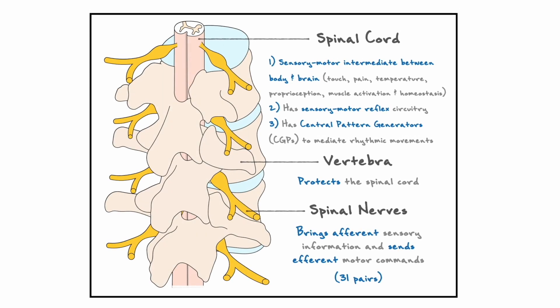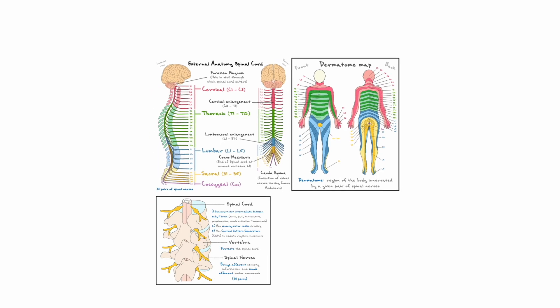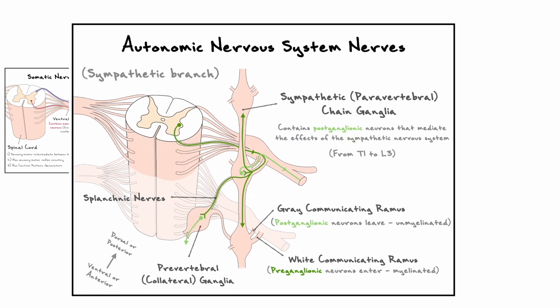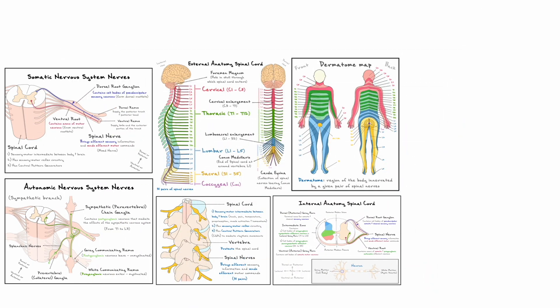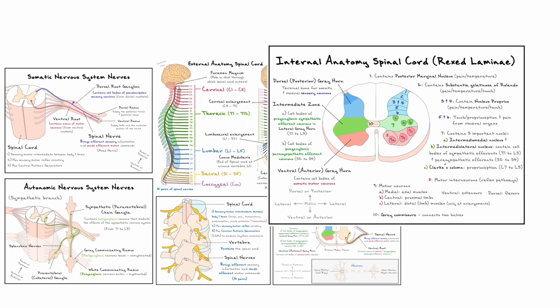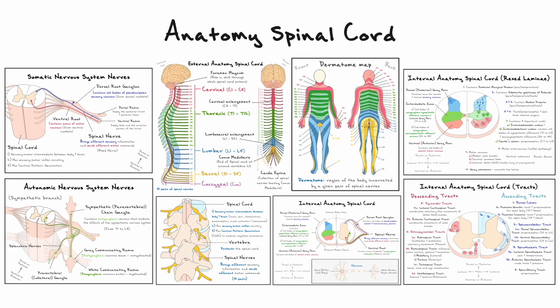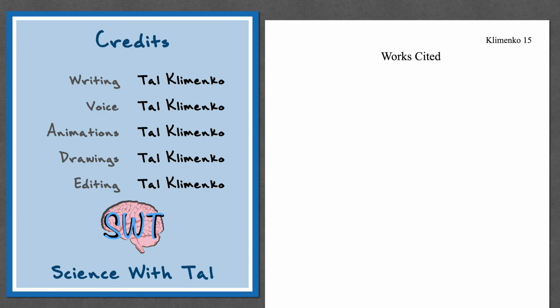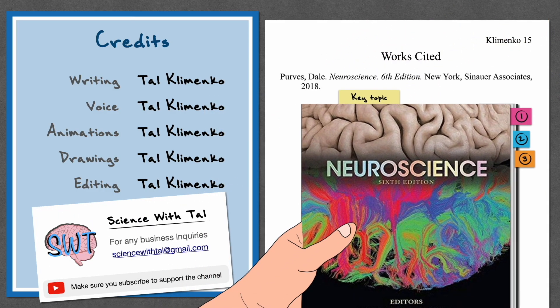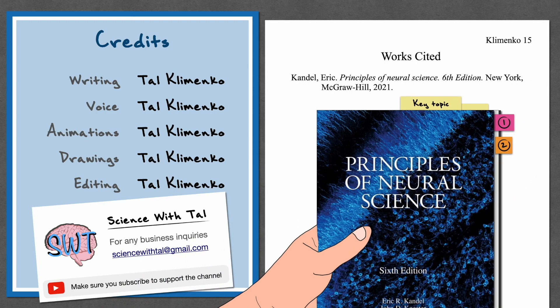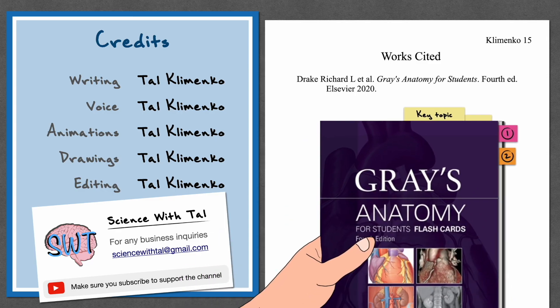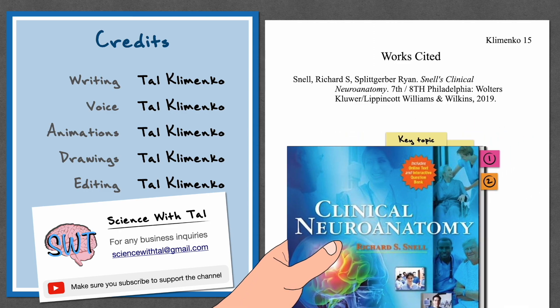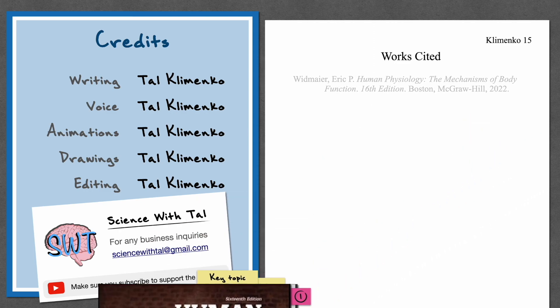With the white matter tracts covered, we have gone through all the main points regarding the spinal cord. The topics covered include the external anatomy of the vertebral column, spinal nerve segments and the associated dermatome map, the anatomy of somatic and sympathetic nerves, and then the internal anatomy of the spinal cord — including general landmarks, the Rexed laminae of gray matter, and the white matter tracts. Thank you for watching. If anything was unclear or there was a mistake, let me know in the comments. If you found this video useful, consider leaving a like and subscribing.